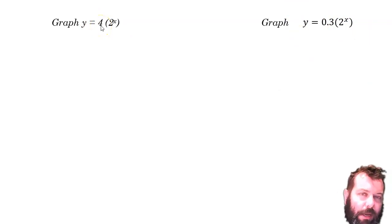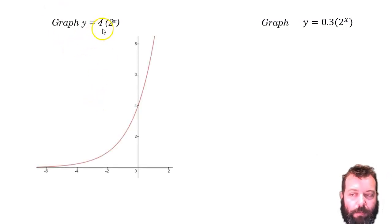We know if the base gets bigger, it grows faster. Well, if the coefficient is a bigger number, it grows faster again. I still have my horizontal asymptote here on the left. But this changes my y-intercept up to 4, because I get 4 times 1.